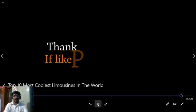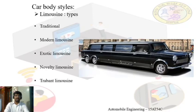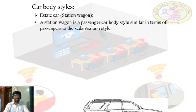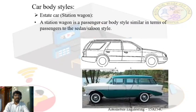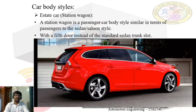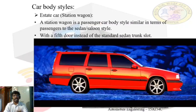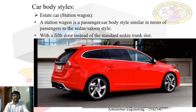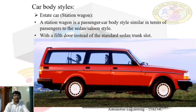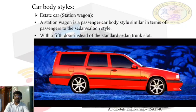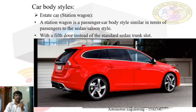After the limousine, the next type is the estate car, also called a station wagon. This vehicle carries both passengers and goods — the front two rows are meant for passengers, and there is another row that can be utilized for passengers or for transporting goods. By folding the last row of seats, we can increase the boot space or luggage space. For a touring purpose, this is one of the best vehicles — you can accommodate more passengers as well as carry more goods.